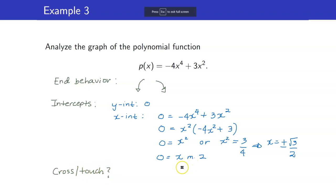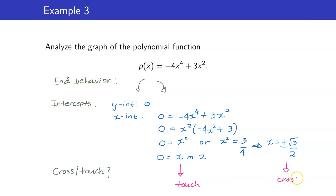Setting each factor to 0, we get x² = 0, or x² = 3/4. For x² = 0, we get x = 0 with multiplicity 2. For x² = 3/4, we get x = ±√(3)/2, each with multiplicity 1. For our behavior at the x-intercepts: x = 0 has multiplicity 2, so therefore it's touch; the others have multiplicity 1, so cross.